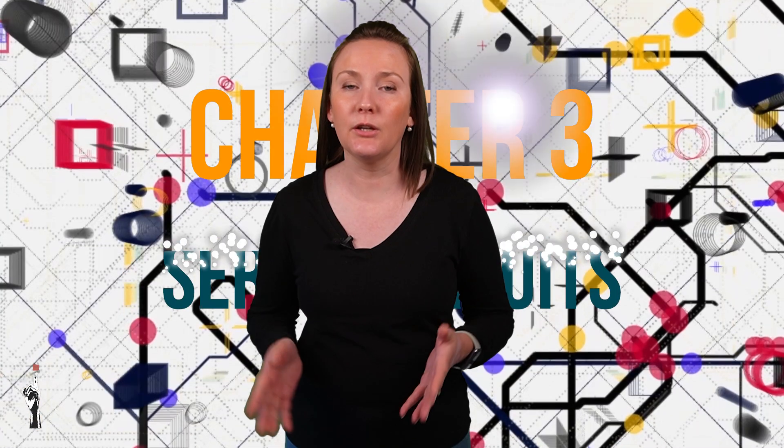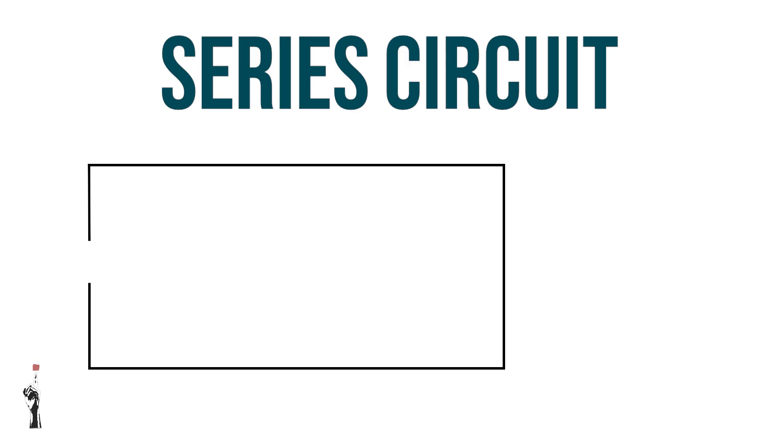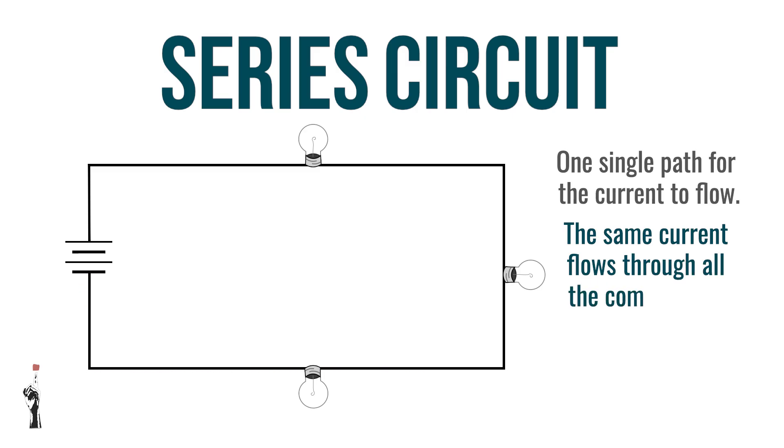Now that we know how circuits connect on a board, let's explore how they behave. First, we'll look at a series circuit. A series circuit has the following: one single path for the current to flow and the same current flows through all the components. The voltage is shared between the components.